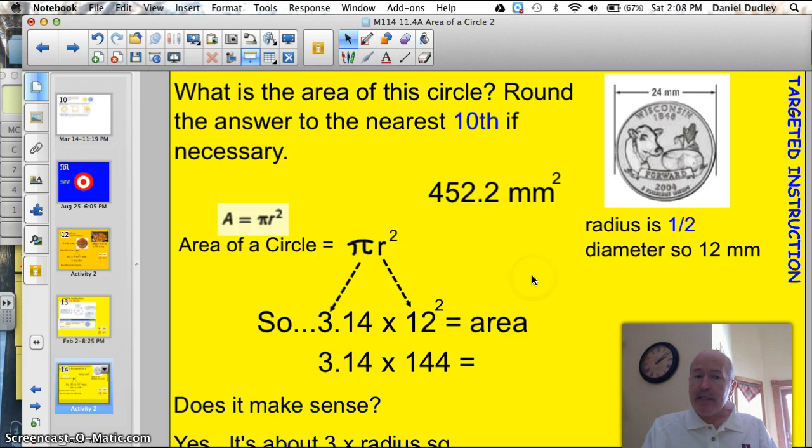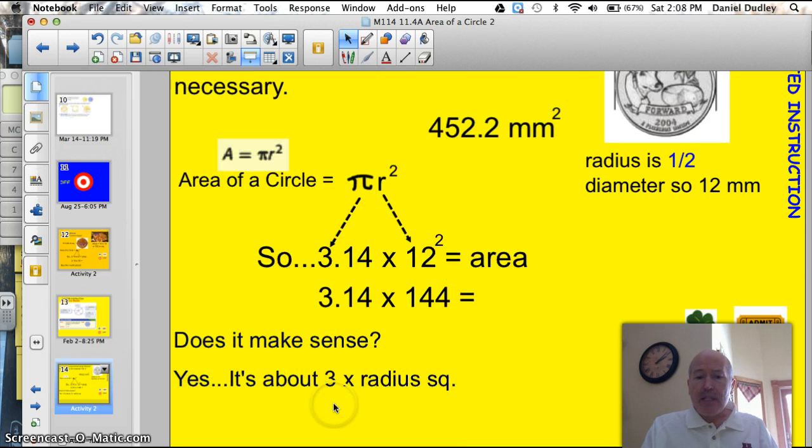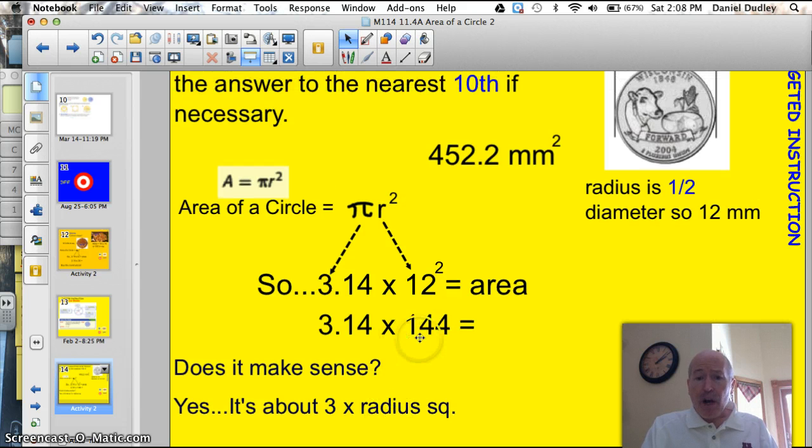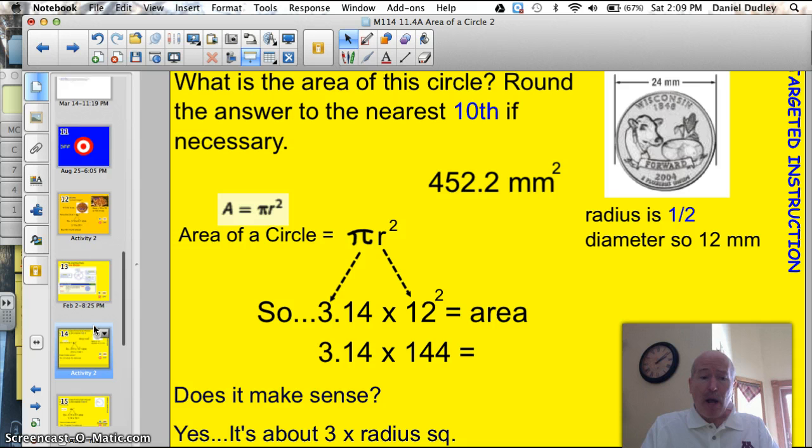Does this answer make sense? Because I'll keep asking you that question. Well, yeah, because it's about 3 times the radius squared. 144, let's call it 150, times 3 is 450, right? I'm using my estimating skills to make sure I've got it right. The most common mistake kids make is they take the 24 millimeters, the diameter, and they square it. You have to make sure to cut that in half. Let's see how you do on this next problem.